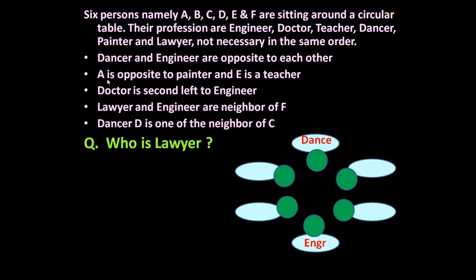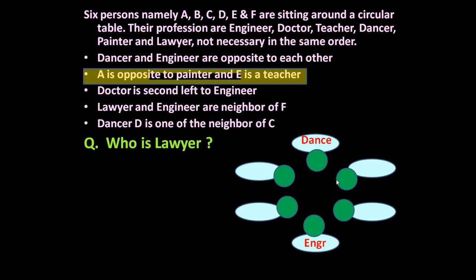The next statement is: A is opposite to painter and E is a teacher. But where is painter, teacher, and A — it is not clear. So initially let us underline this statement, because at present we don't know where A is, where painter is, or where teacher is.